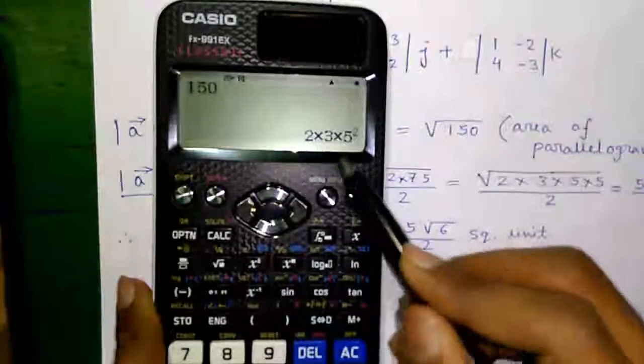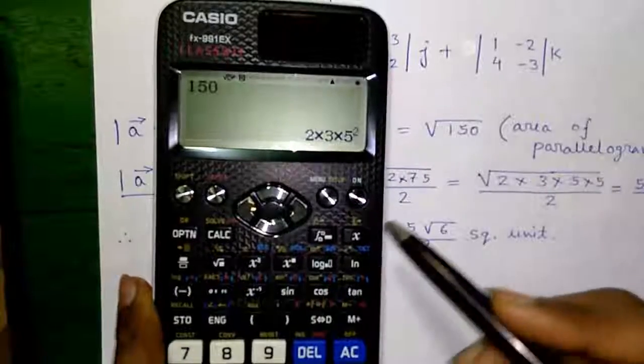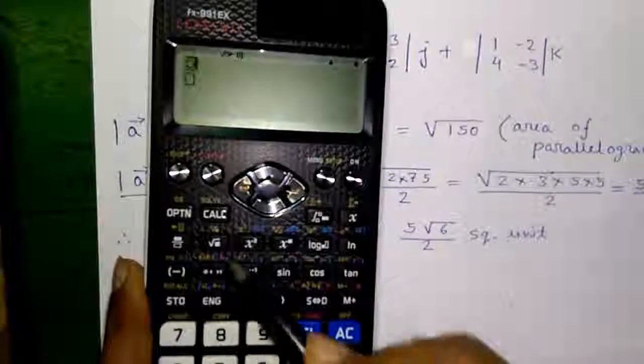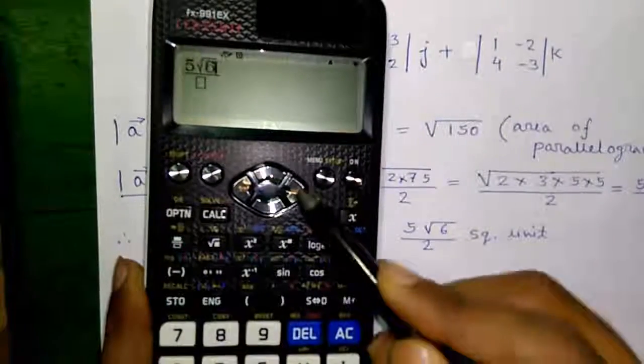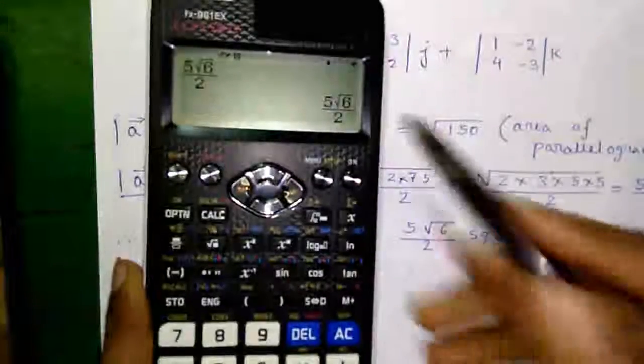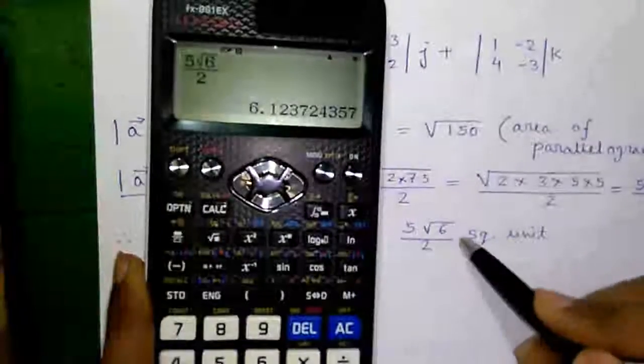So that will be 5 into root 6 which is area of the parallelogram and area of the triangle will be, press this fraction button, 5 root 6 by 2, press equals to, press S to D button to get the decimal form 6.1237, the value we got.